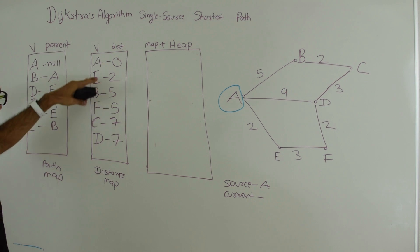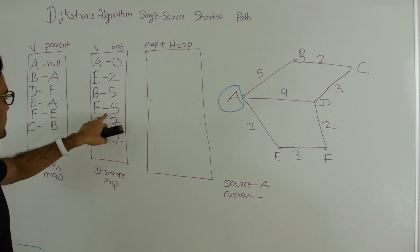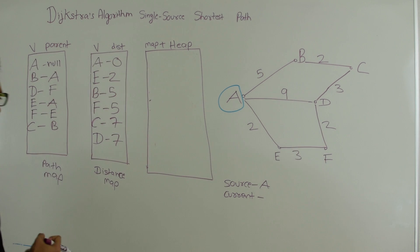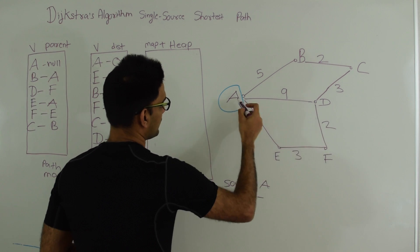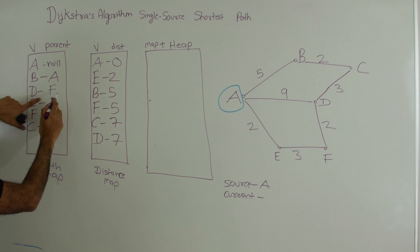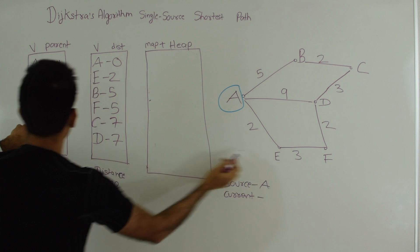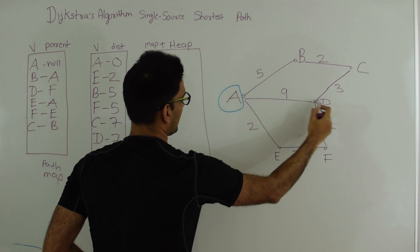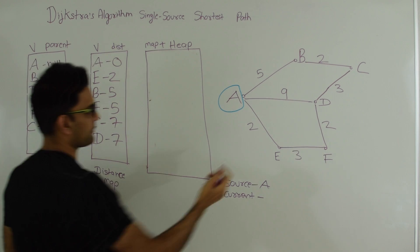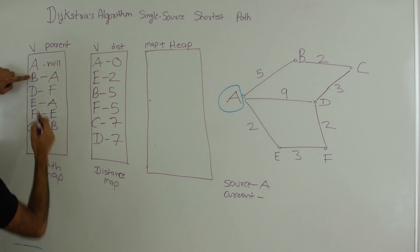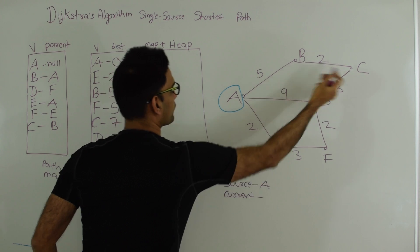This is the shortest distance of every vertex from A: E is at distance 2, F is at distance 5, B is at distance 5, C is at distance 7, and D is at distance 7. To trace the path to D from A: D's parent is F, F's parent is E, and E's parent is A — so the path is A→E→F→D. To reach C: C's parent is B, and B's parent is A — so the path is A→B→C.